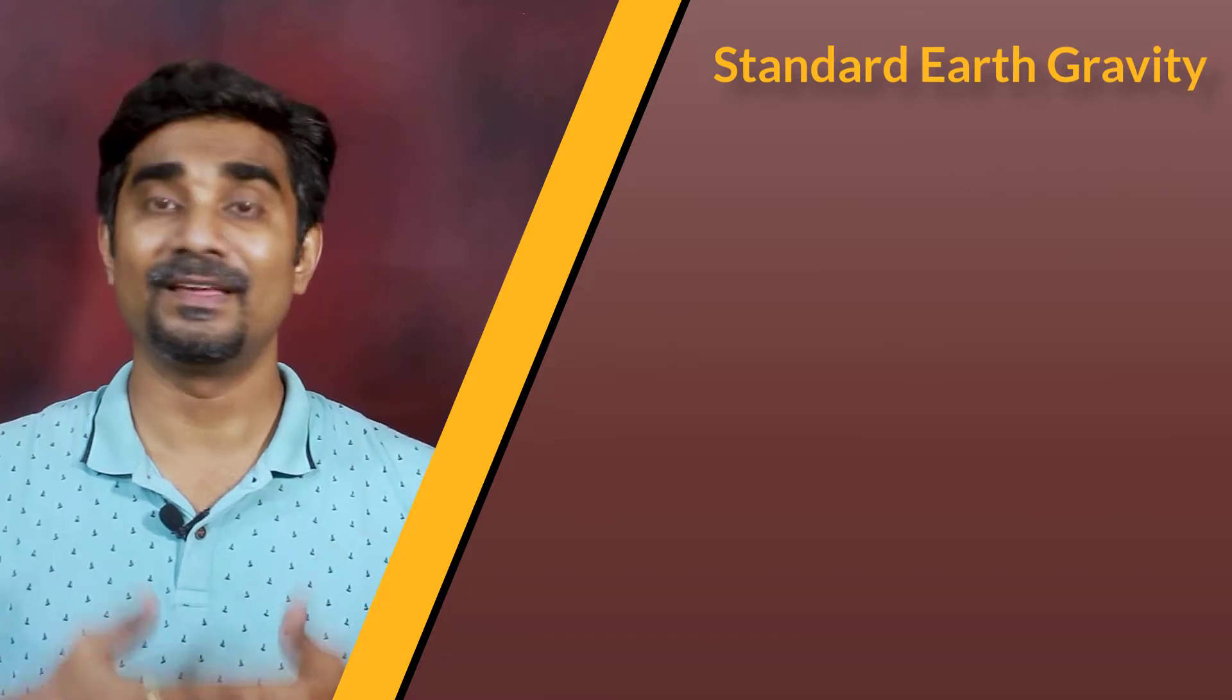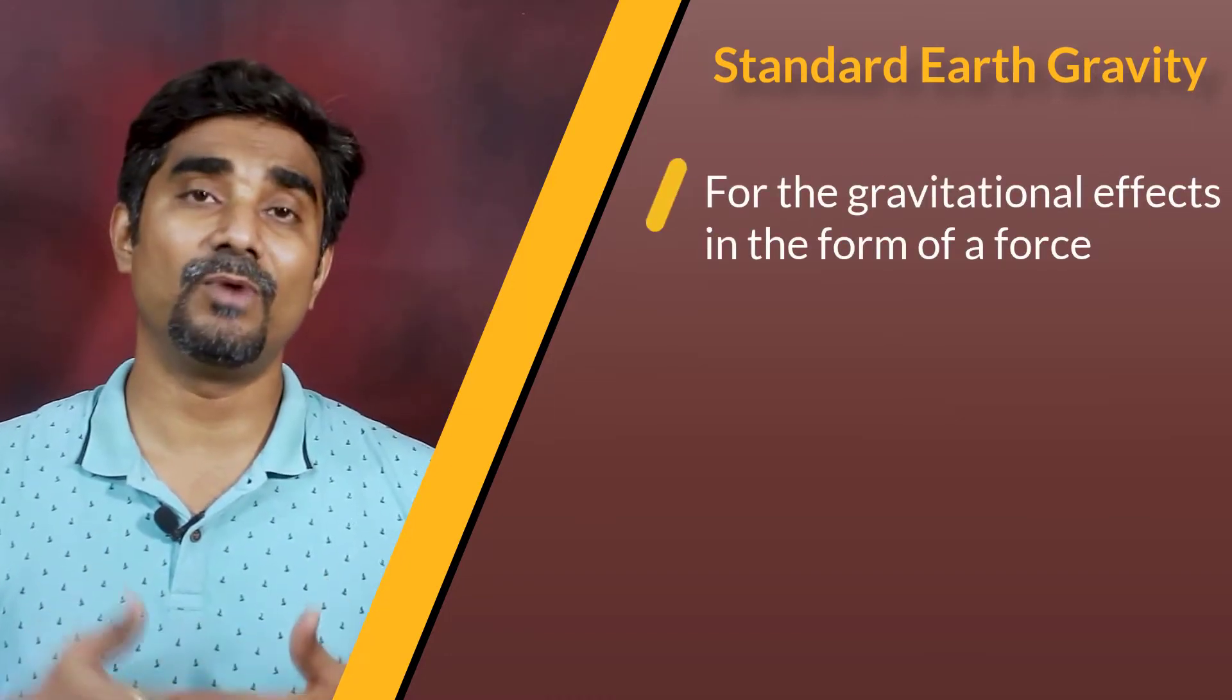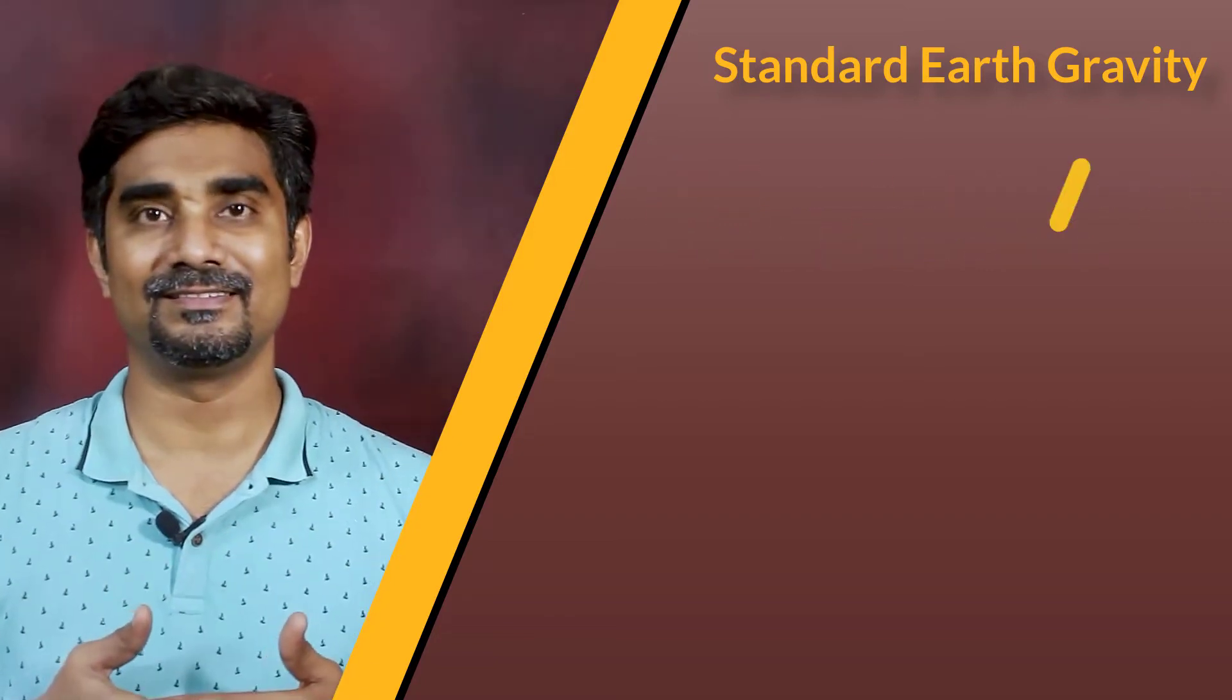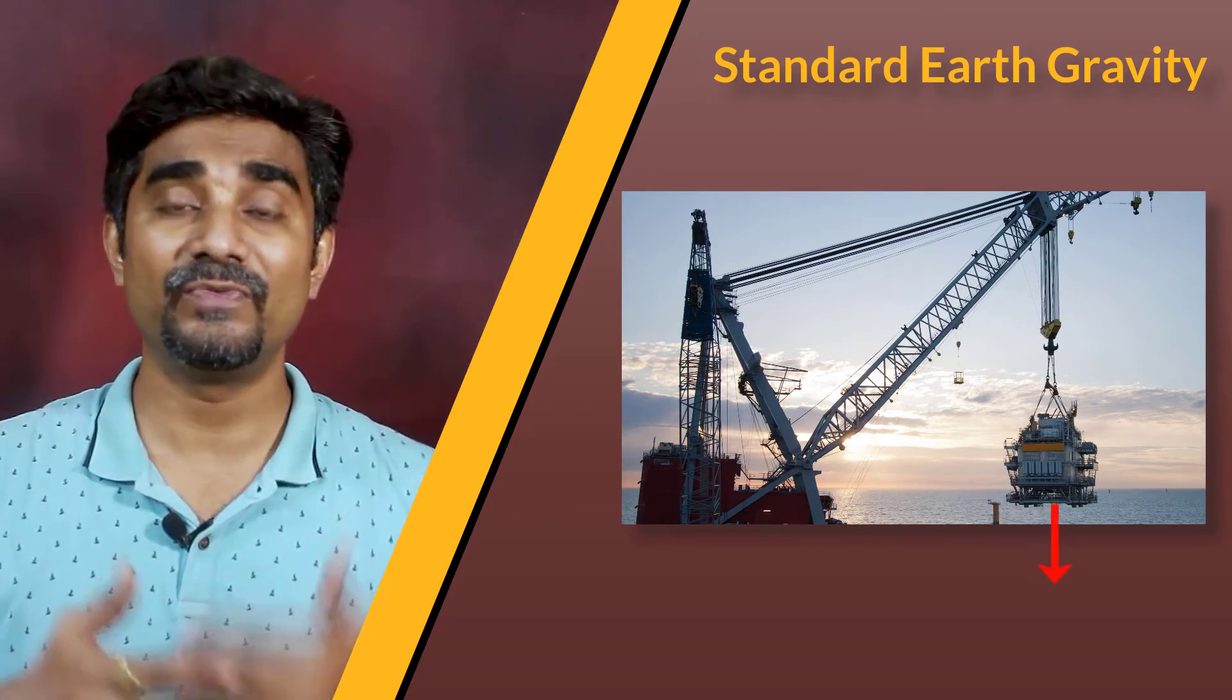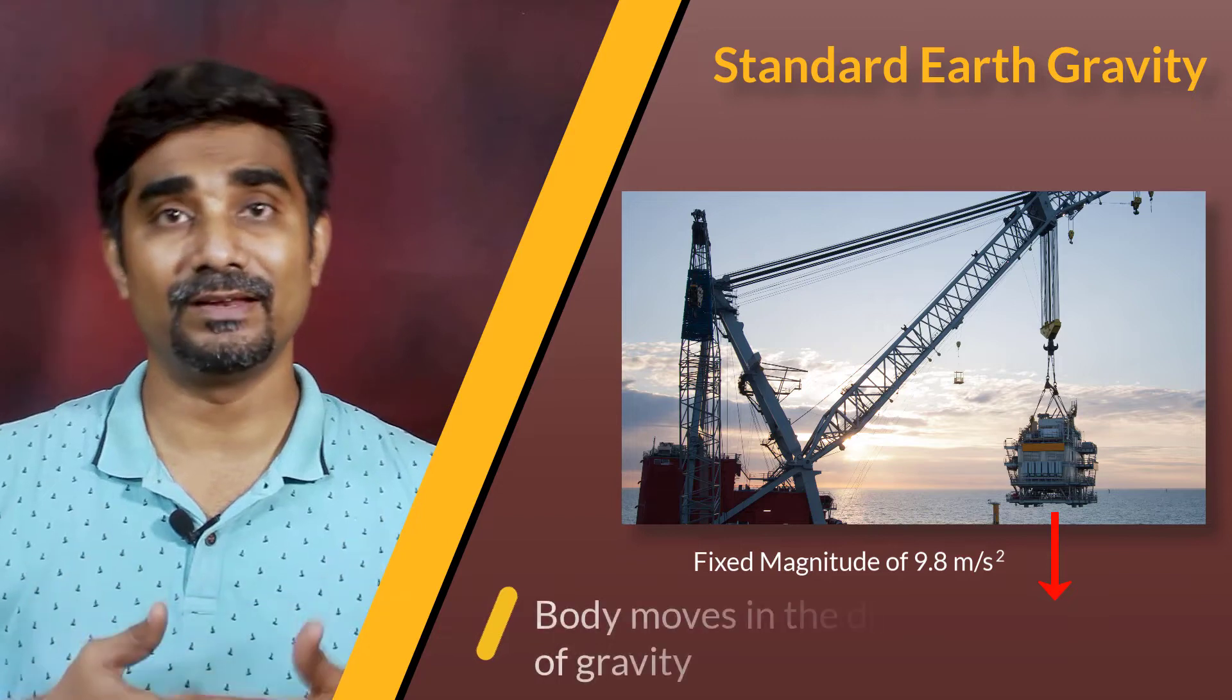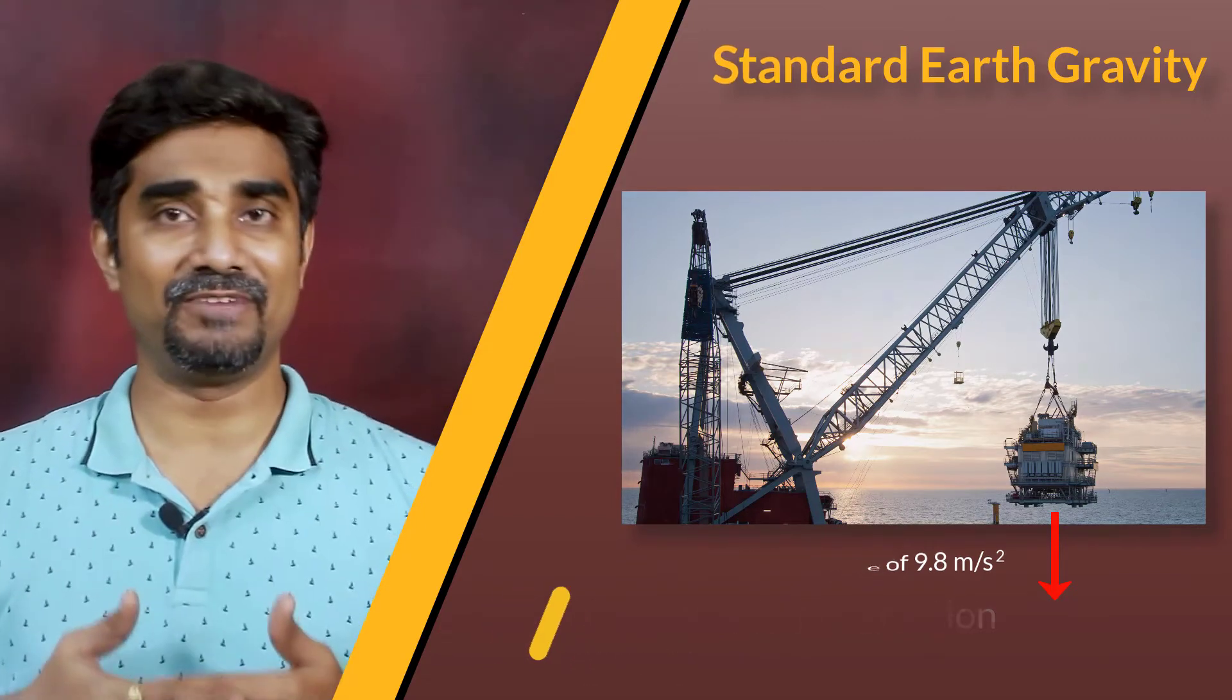The simplest one is the standard earth gravity. It is used to model the gravitational effect on a body in the form of a force or weight. Gravity is the specific example of acceleration with a fixed magnitude of 9.8 meters per second squared and it causes the body to move in the direction of gravity.